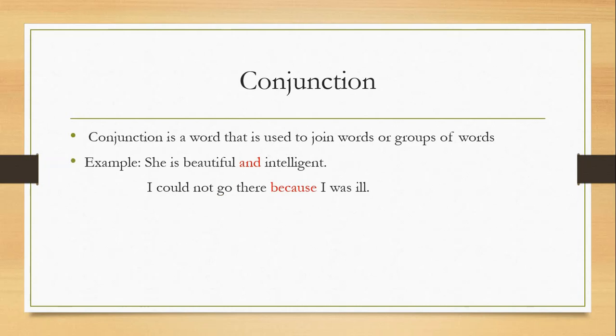Then comes conjunction. Conjunction is a word that is used to join words or groups of words. We can call them joining words. She is beautiful and intelligent. Instead of saying in two sentences, we can say she is beautiful and intelligent.